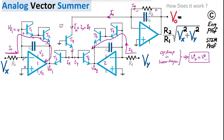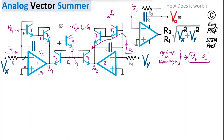Applying Kirchhoff's Voltage Law (KVL) from zero volts at the base of T1, we can write: Vout1 = 0 − VBE1 − VBE2, where VBE1 and VBE2 are the base-emitter voltages of transistors T1 and T2.